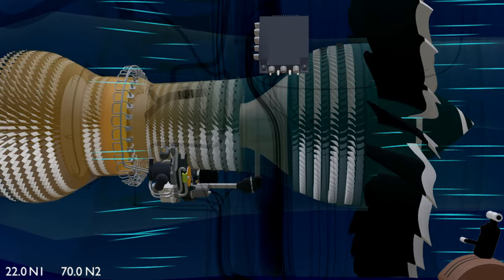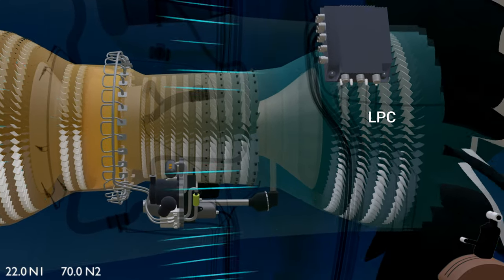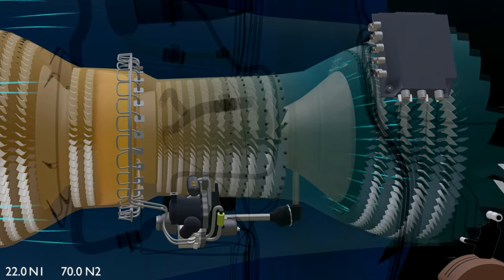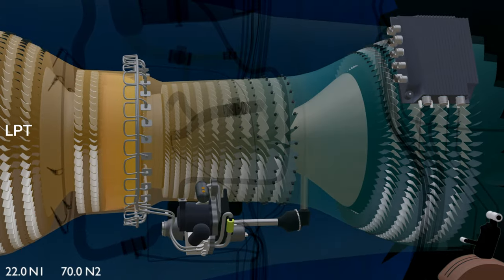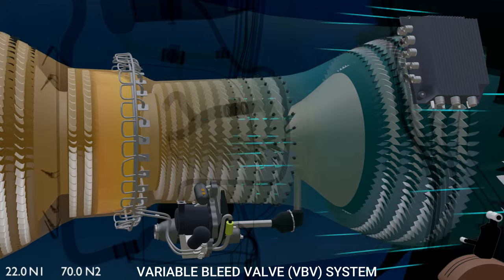To counter this, the GE90 is equipped with four crucial systems that control the airflow into the low-pressure compressor, the high-pressure compressor, the high-pressure turbine, and the low-pressure turbine for all thrust settings. Let's start with the variable bleed valve system.